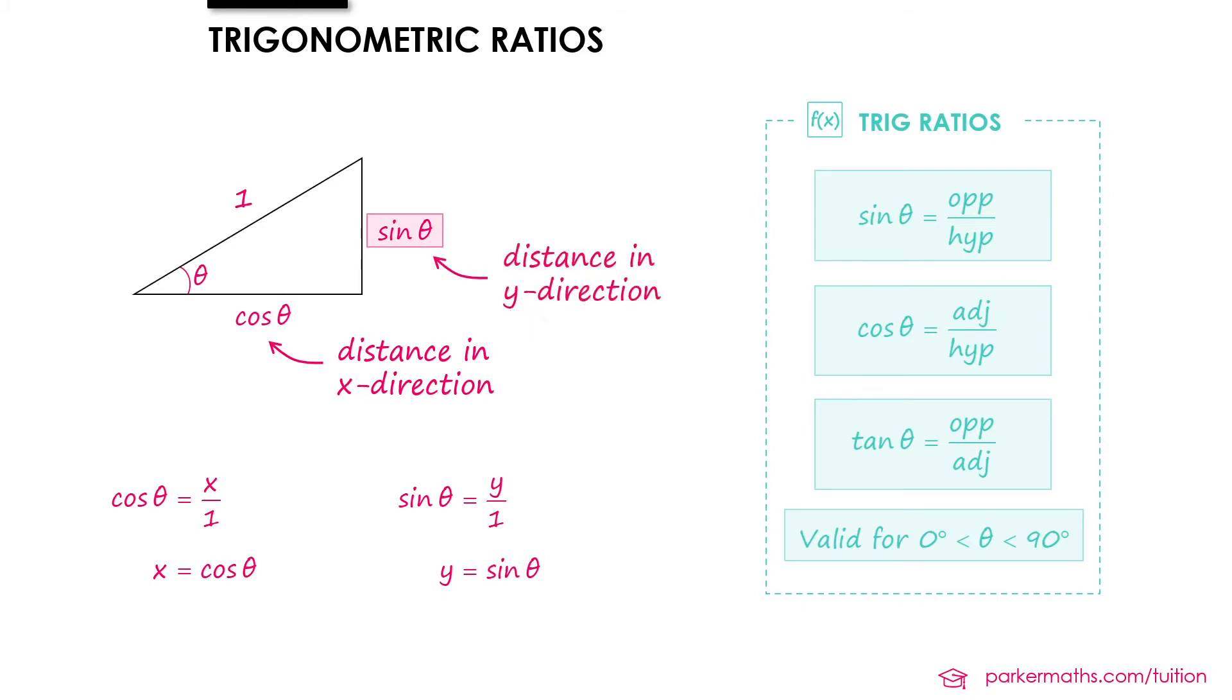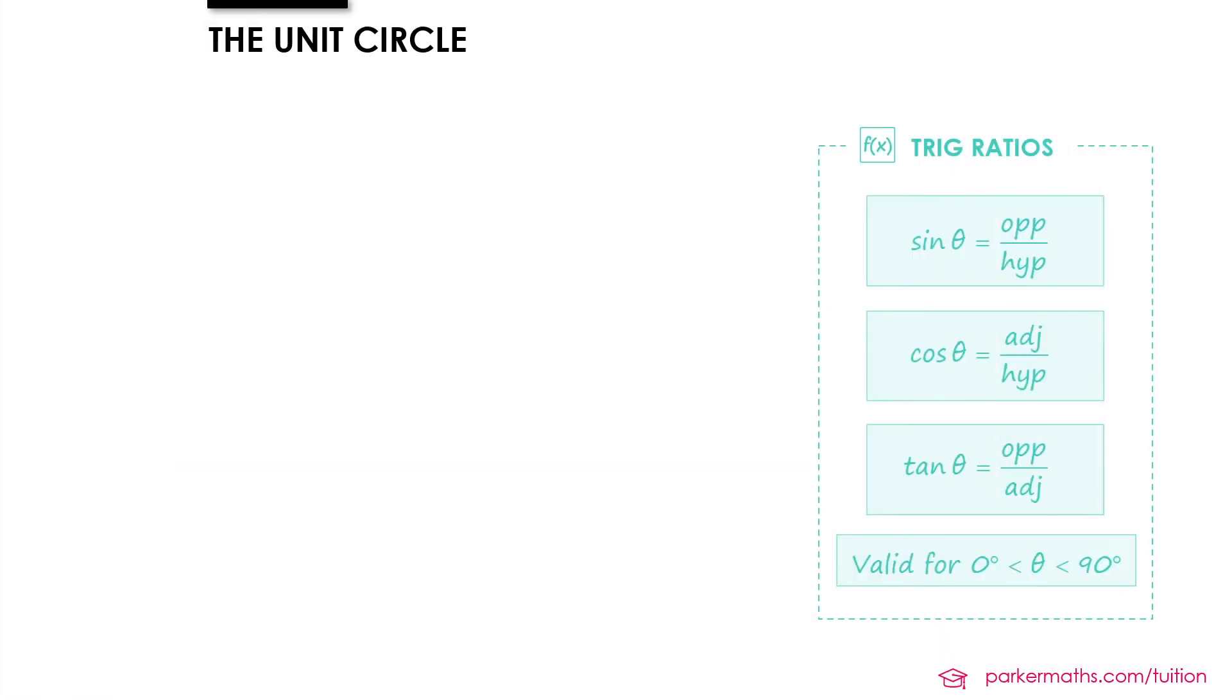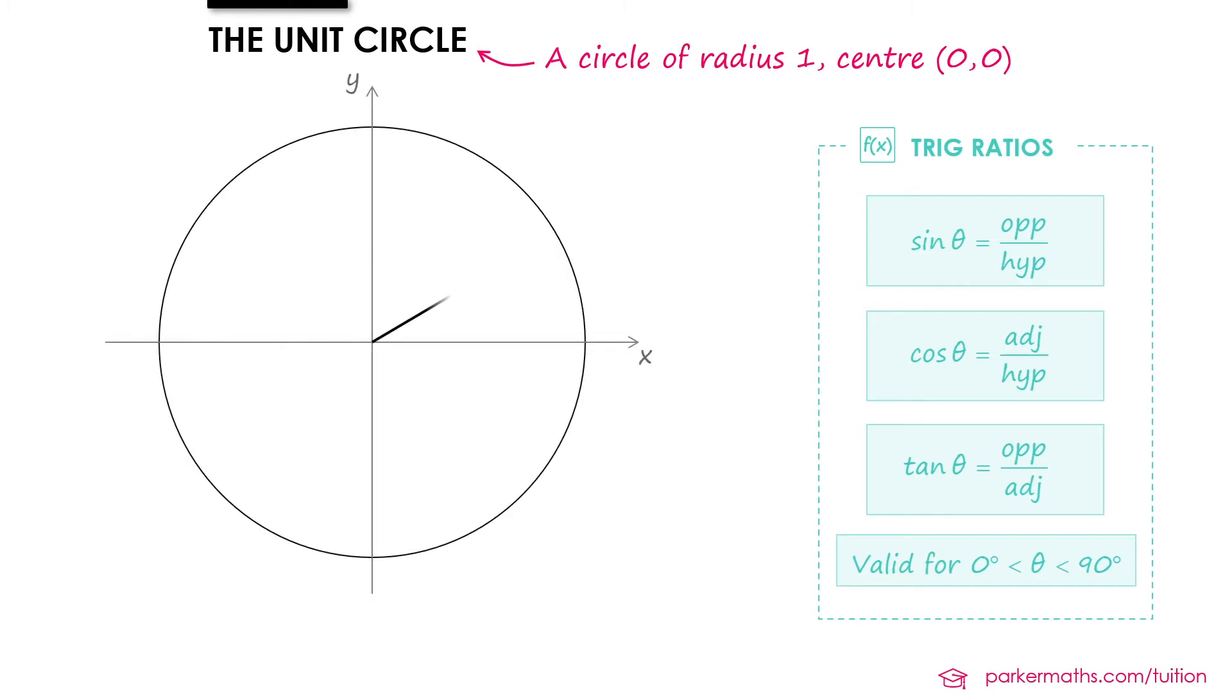So let's take these ideas and look at the unit circle. By unit circle we simply mean a circle of radius 1 with its center at the origin. So it would look something like this, where we have a circle and a radius of length 1.